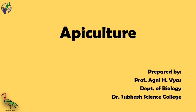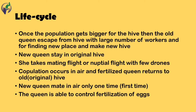When the population of the hive gets bigger, the old queen escapes from the hive with a large number of workers and drones to find a new place. The new queen stays in the old hive. The new queen then takes a mating flight, or nuptial flight, with a few drones. Copulation occurs in the air, and the fertilized female returns back to the hive. This mating in the air occurs only one time.